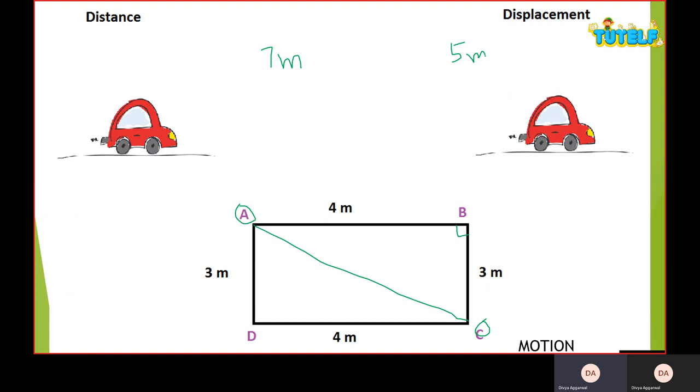Now here you have to see that distance only has magnitude in it. Magnitude is this value, 7 meters. And displacement has both this magnitude as well as the direction which is like southeast here. We have done the position. We know how to mention the direction of an object.